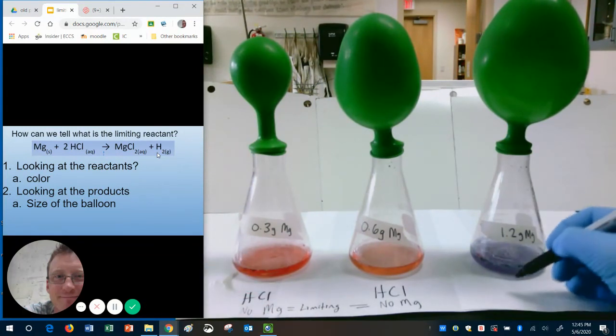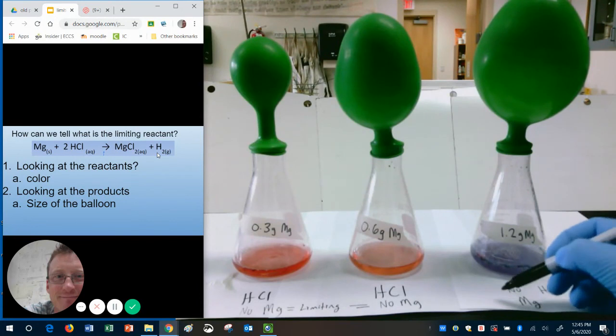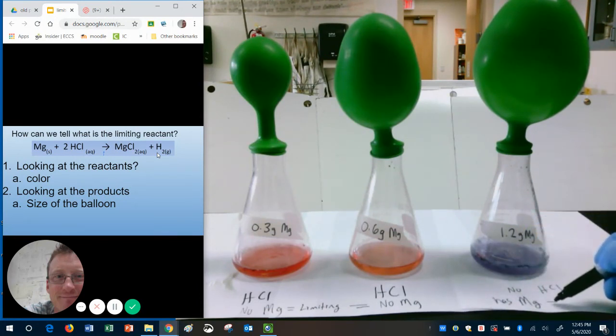So, this tells us in these two containers, magnesium must be the limiting. Because if it runs out, there isn't any of that left over. And in this one, it's the exact opposite. There's no HCl left, but there must be some magnesium left in there. So, this, then, is the excess.